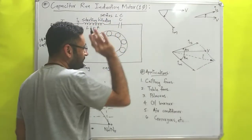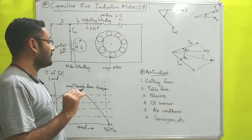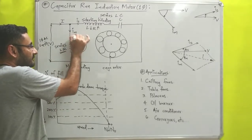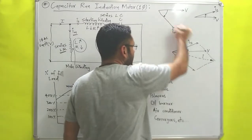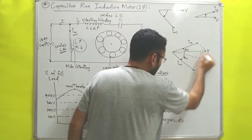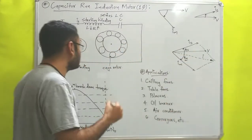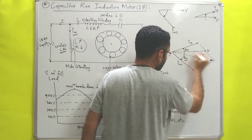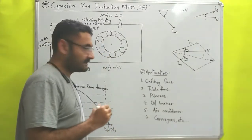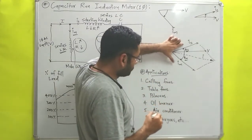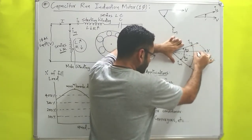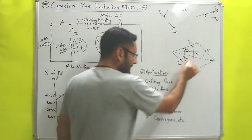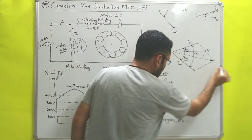Now for the working principle: the current Im flowing through the main winding lags behind the voltage by phase angle phi-m. The current Is flowing through the starting winding leads the voltage by phase angle phi-s. This means between both currents there is a phase difference, say alpha. To find the resultant current I, we draw a parallelogram of the two currents. According to Faraday's principle, the resultant current produces a magnetic field in a certain direction.